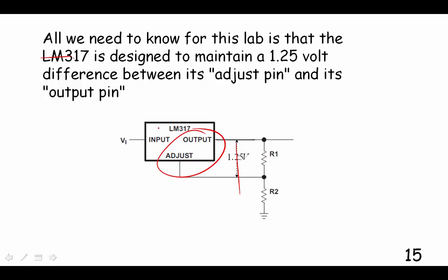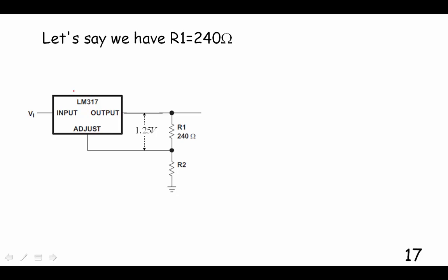We'll make use of this reference voltage to make an adjustable voltage regulator. How do we do that? Let's say that we have a 240 ohm resistor for our R1 voltage, which is maintained at 1.25 volts by the 317.